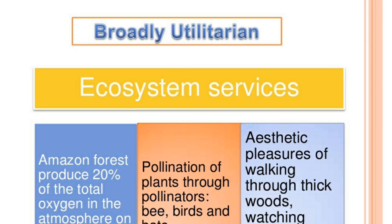Ecosystem services: the Amazon forest produces 20 percent of the total oxygen in the atmosphere. Pollination of plants is carried out through pollinators like bees, birds, and other animals. Aesthetic pleasure of walking through thick woods and watching nature are also broadly utilitarian values of the ecosystem.